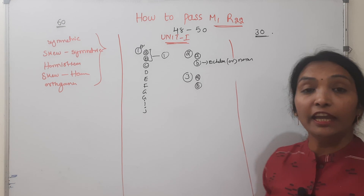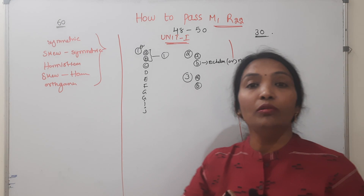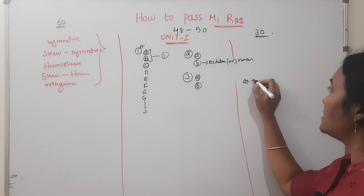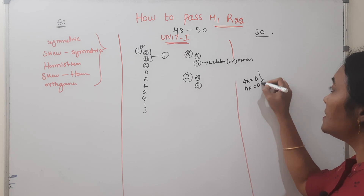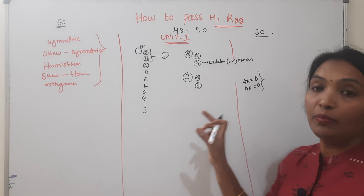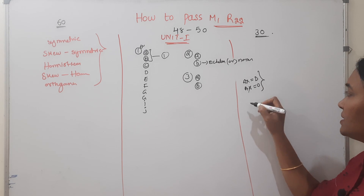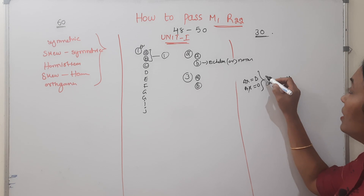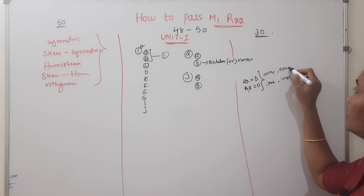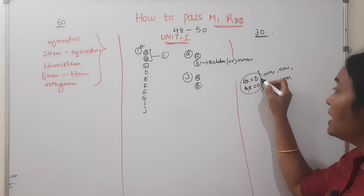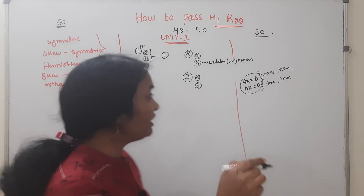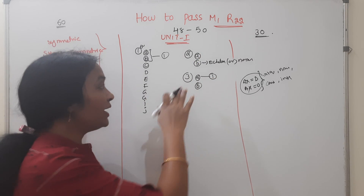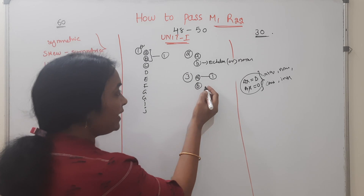If you call them non-homogeneous and homogeneous systems, we will talk a lot about these in our playlist. The forms are Ax = b and Ax = 0. We will prepare the system of non-homogeneous equations. The system can be consistent or inconsistent, with a unique solution, no solution, or infinite solutions.